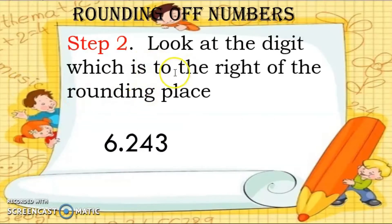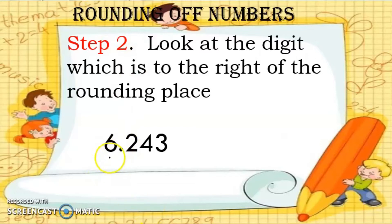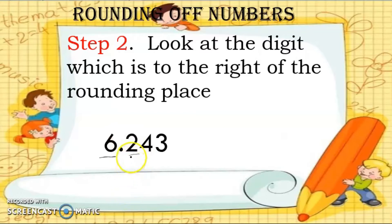Step 2: look at the digit to the right of the rounding place. If our rounding place is 6, what is the number to the right of it? That is the number 2.